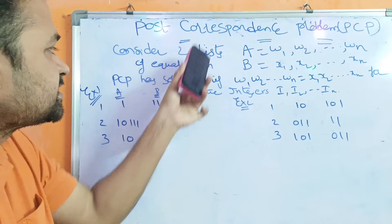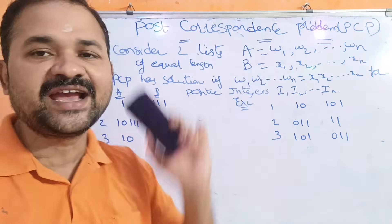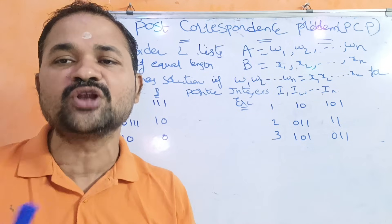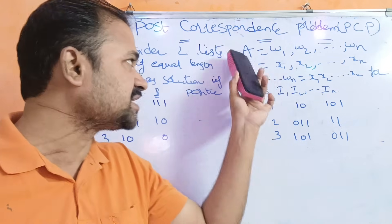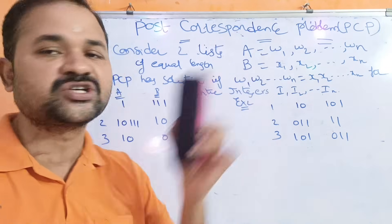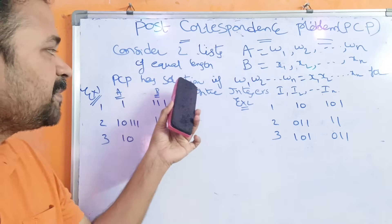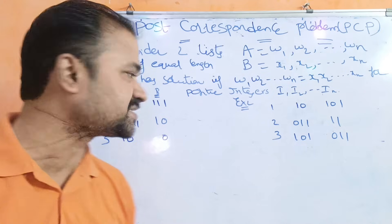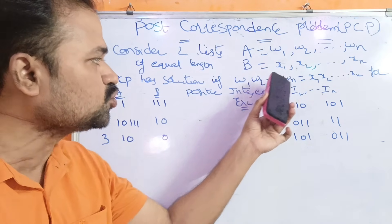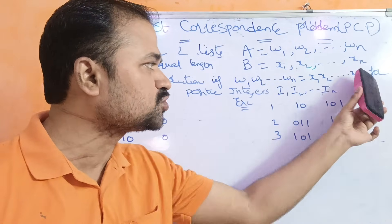These two lists are of equal length. So that means if A list contains three strings, then B list should also contain three strings. Similarly, if A list contains five strings, then B list should also contain five strings. PCP, that means the Post Correspondence Problem, has a solution if W1, W2, so on WN is equal to X1, X2, so on XN.